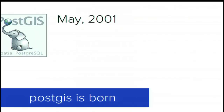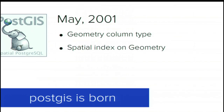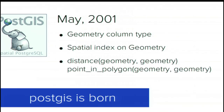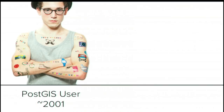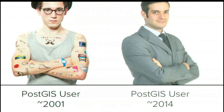The first release of PostGIS was in May of 2001. It included the basic types and just a handful of functions, but nonetheless people started using it almost immediately. The city of Boston, Fulton County Georgia — it was the first PostGIS user within a couple of years of release. It's been over a decade now. And as we see, using PostGIS is about as cutting edge as using Linux, which is to say, not very cutting edge at all.